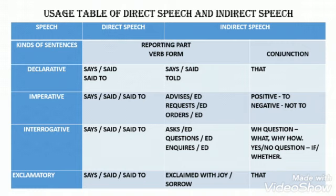For an imperative sentence, the reporting part verb forms in direct speech are 'says,' 'said,' 'said to.' In indirect speech, we use 'advises,' 'requests,' or 'orders' for present tense, and 'advised,' 'requested,' 'ordered' for past tense. The conjunction for a positive imperative sentence is 'to'; for a negative sentence, it is 'not to.'